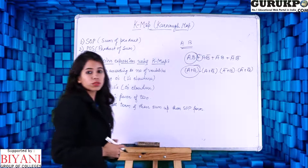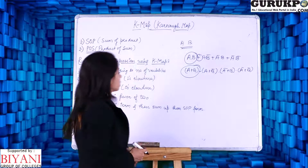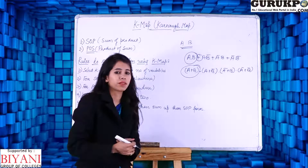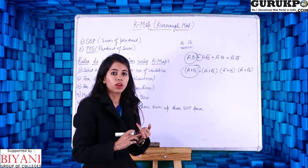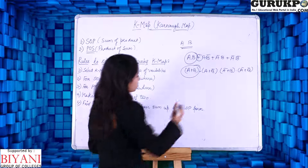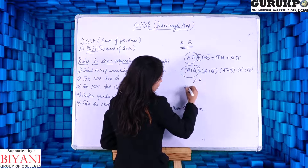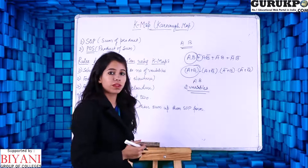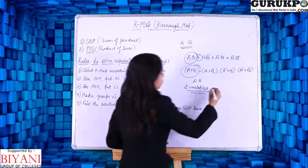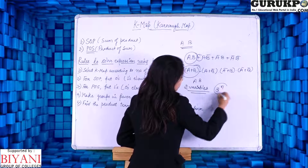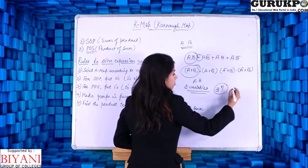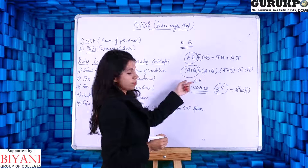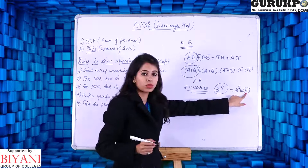There are various rules to solve expressions using KMAP. The first rule is to select the KMAP according to the number of variables. The number of variables can vary from 2, 3, 4, or 5. For two variables A and B, we use 2 to the power N cells, where N is the number of variables. So 2 to the power 2 equals 4, meaning for two variables we have a KMAP of 4 cells or grids.